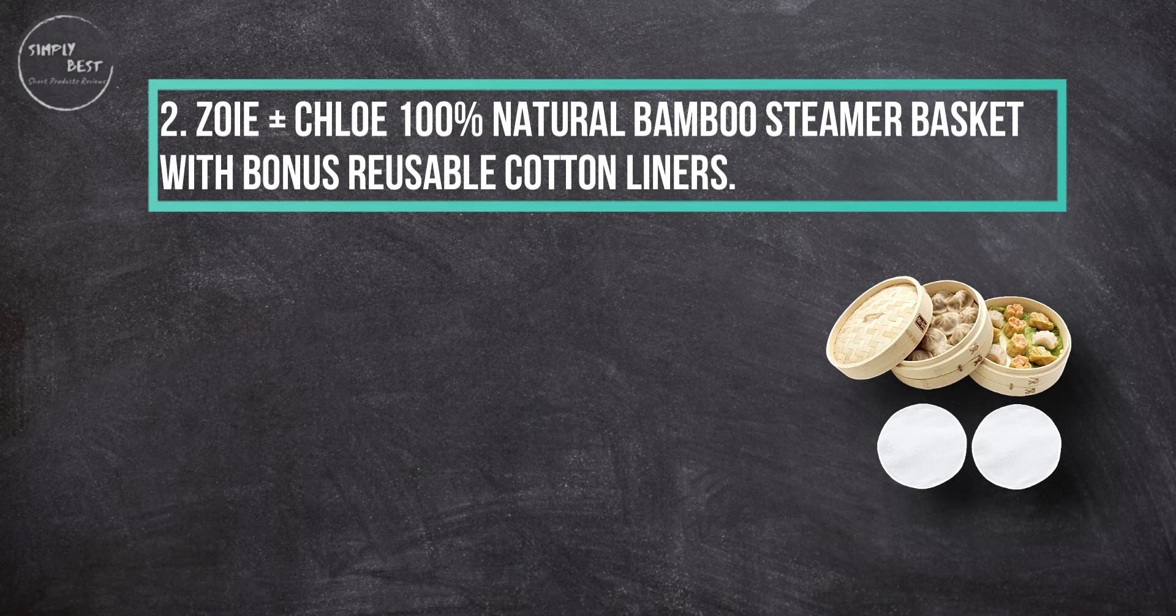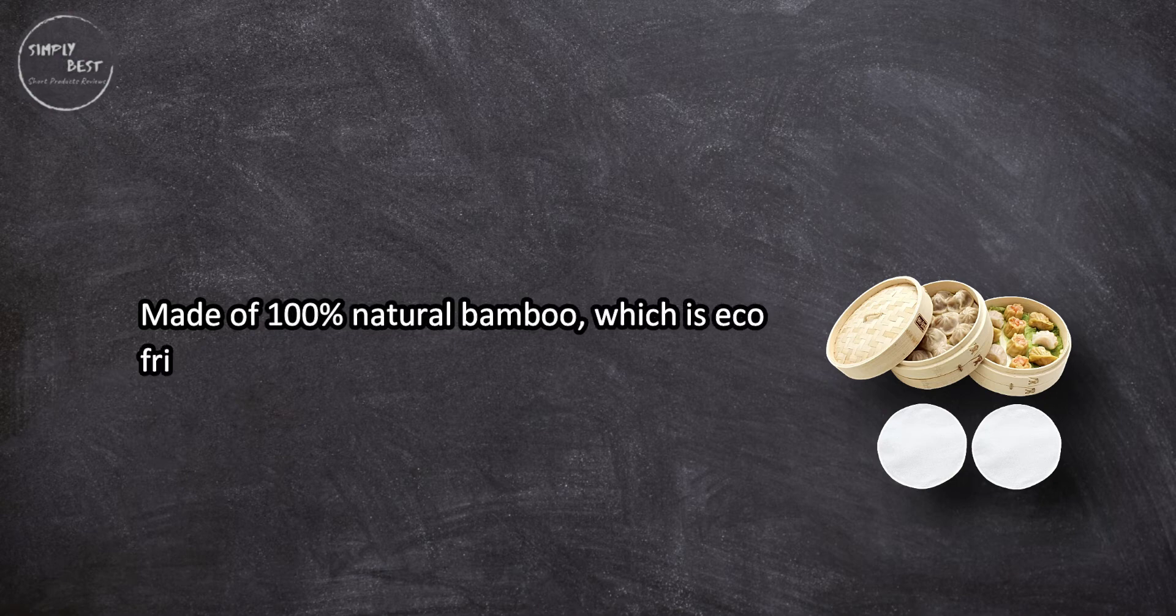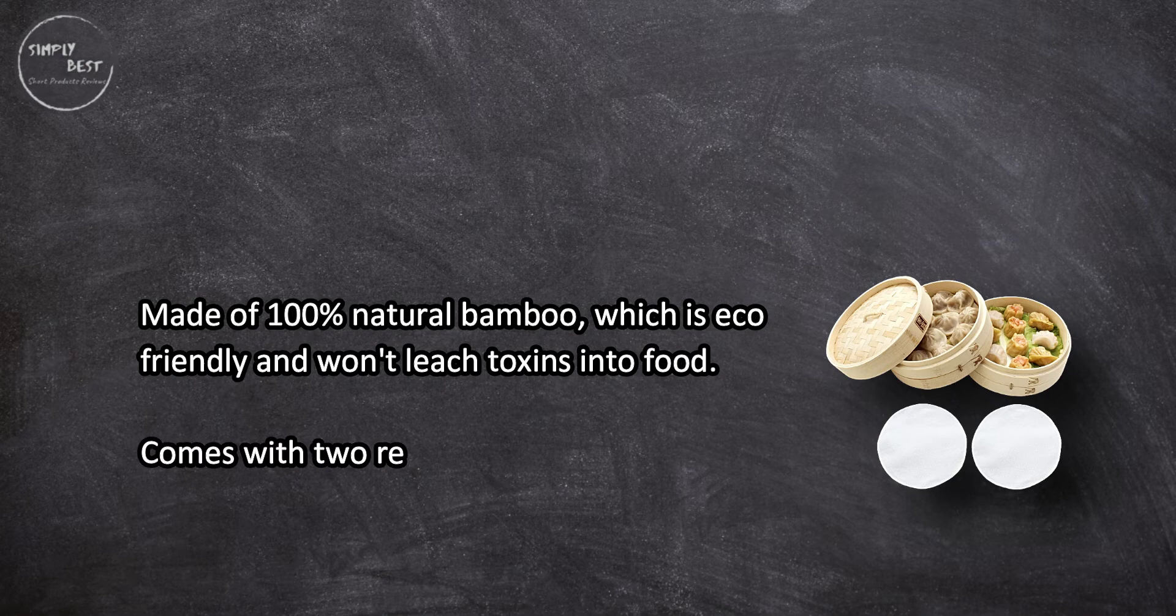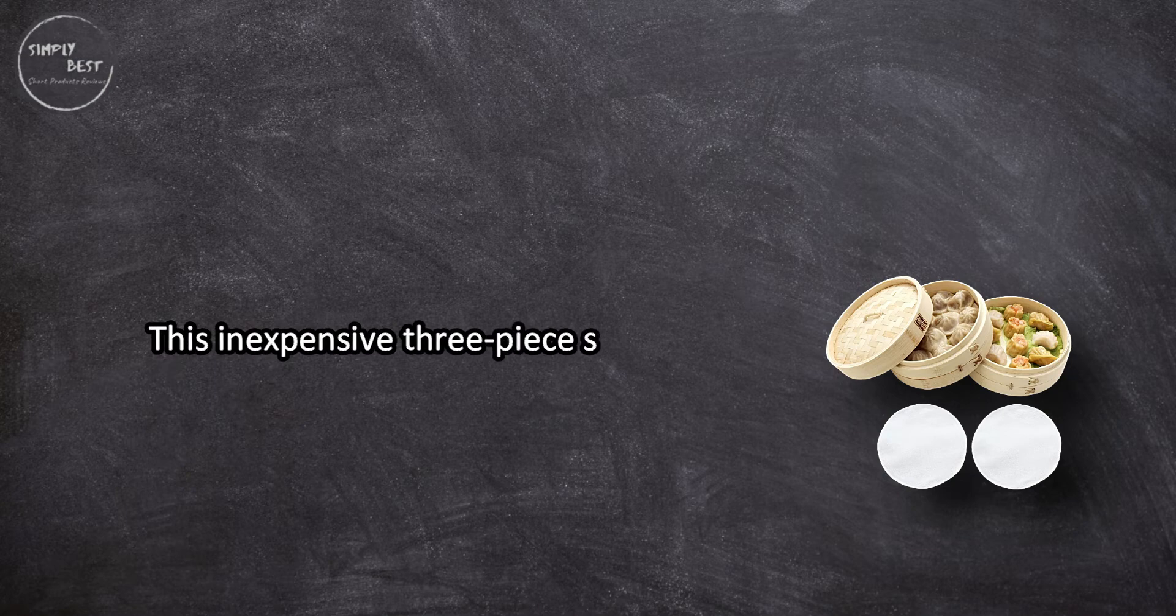Made of 100% natural bamboo, which is eco-friendly and won't leach toxins into food. Comes with two reusable cotton liners for cooking. This inexpensive three-piece set of bamboo steamer baskets works well for steaming dumplings, fish, and other foods.